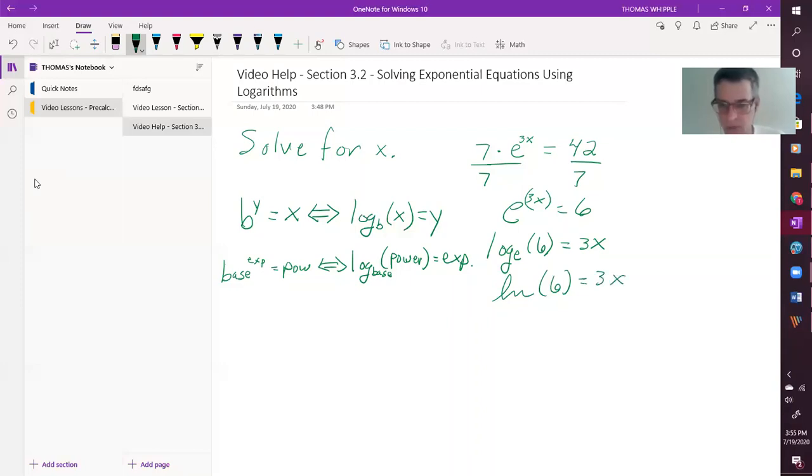So this really simplifies our problem right now. Just to isolate x, all we have to do is divide by 3 or multiply by 1 third, so we're going to be left with x equals 1 third times the natural log of 6. And that's actually the exact answer.